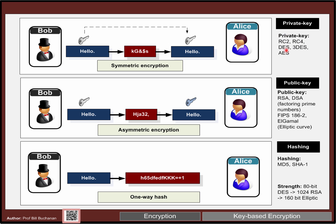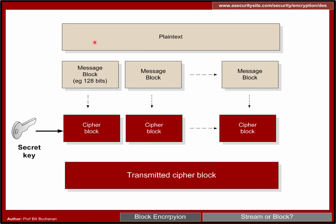We're going to concentrate on private key and how private key is actually able to change the cipher that we produce. So what we have is our plain text or our data — we split it up into standard message blocks, which provide us with our chunks of data. Then we take a secret key and encrypt each of the cipher blocks with the secret key.